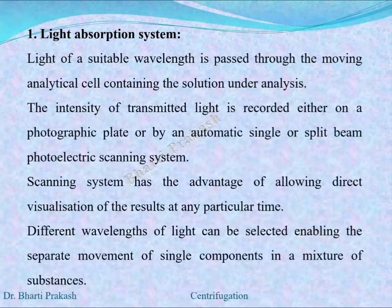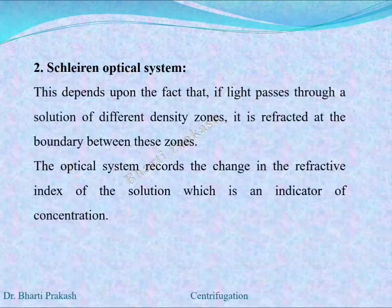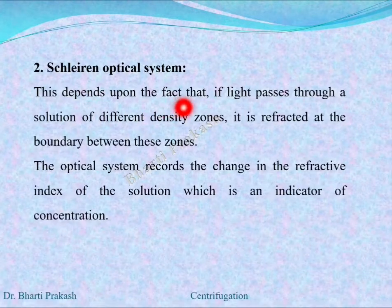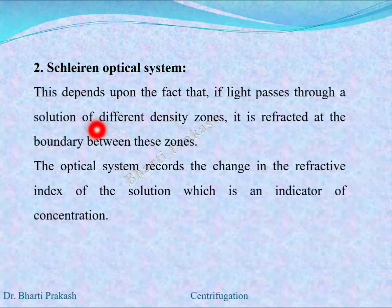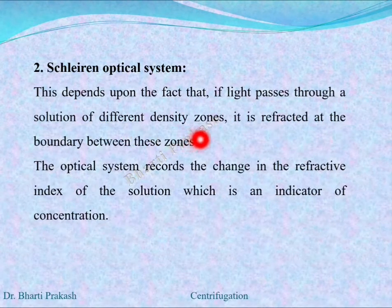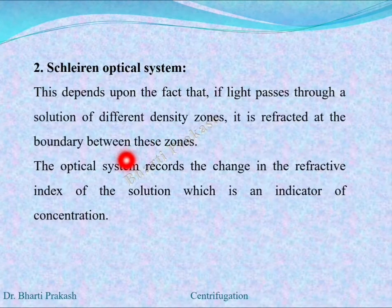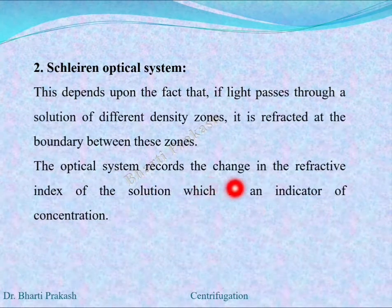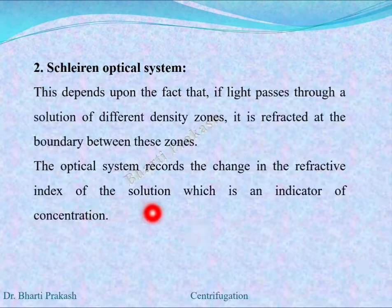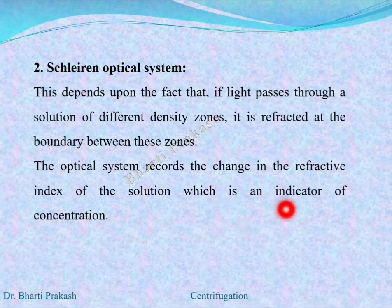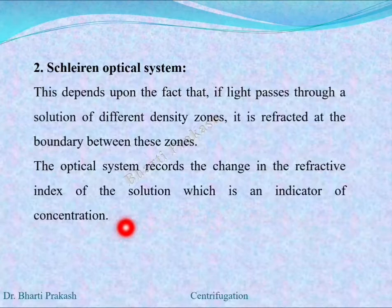The second type is the Schlieren optical system. This depends upon the fact that if light passes through a solution of different density zones, it is refracted at the boundary between these zones. The optical system records the changes in the refractive index of the solution, which is an indicator of concentration.